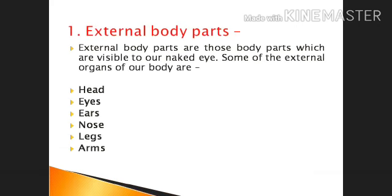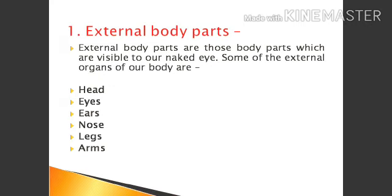First, External Body Parts. External Body Parts are those body parts which are visible to our naked eyes. Some of the external organs of our body are Head, Eyes, Ears, Nose, Legs, and Arms.